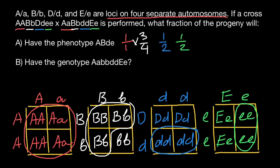Now we just have to multiply all these independent probabilities. We do not include gene A since its probability is one — multiplying by one doesn't change the result. So three-quarters times one-half is three-eighths, and times one-half again is three-sixteenths. Three-sixteenths is the probability of this phenotype in the progeny.